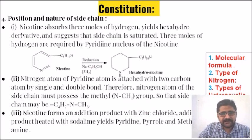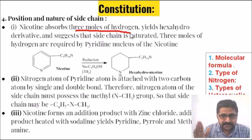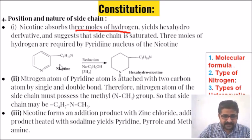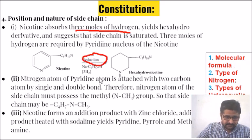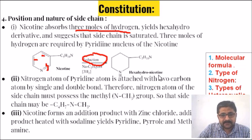Next: position and nature of side chain. Nicotine absorbs three moles of hydrogen and yields a hexahydro derivative, suggesting that the side chain is saturated. Three moles of hydrogen are required by the pyridine molecule in nicotine. On reduction with sodium and ethanol, bonds 1, 2, and 3 are reduced and we get hexahydronicotine. From this, we can say the side chain is saturated.